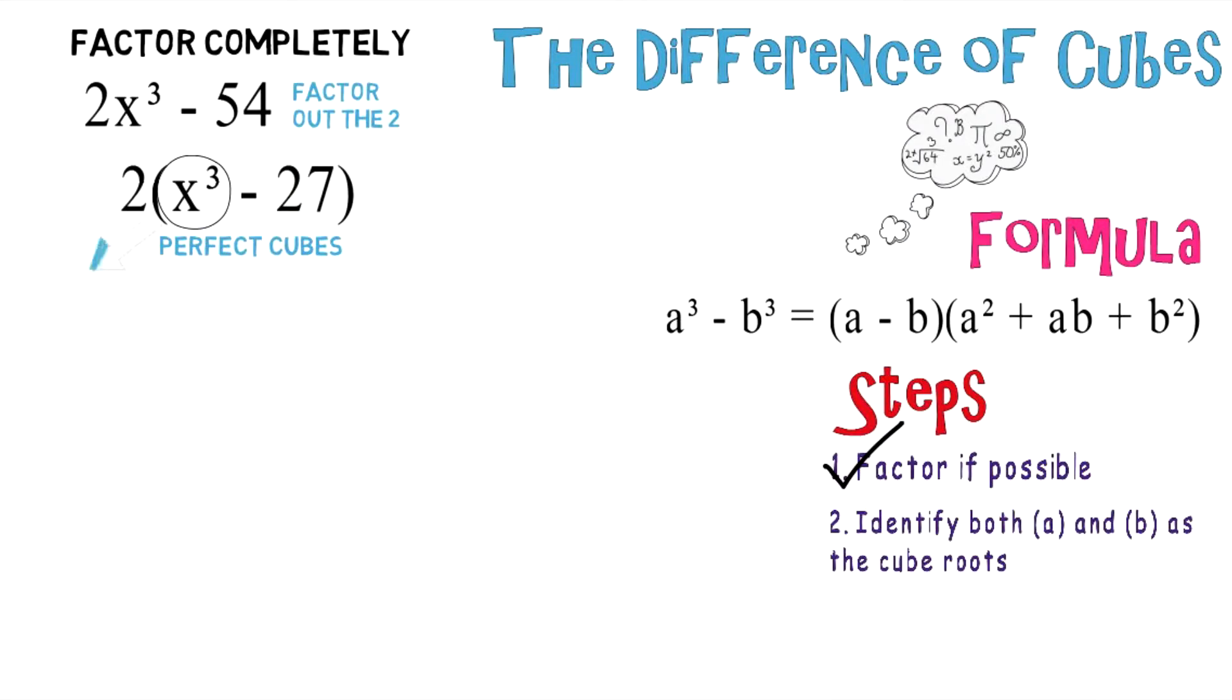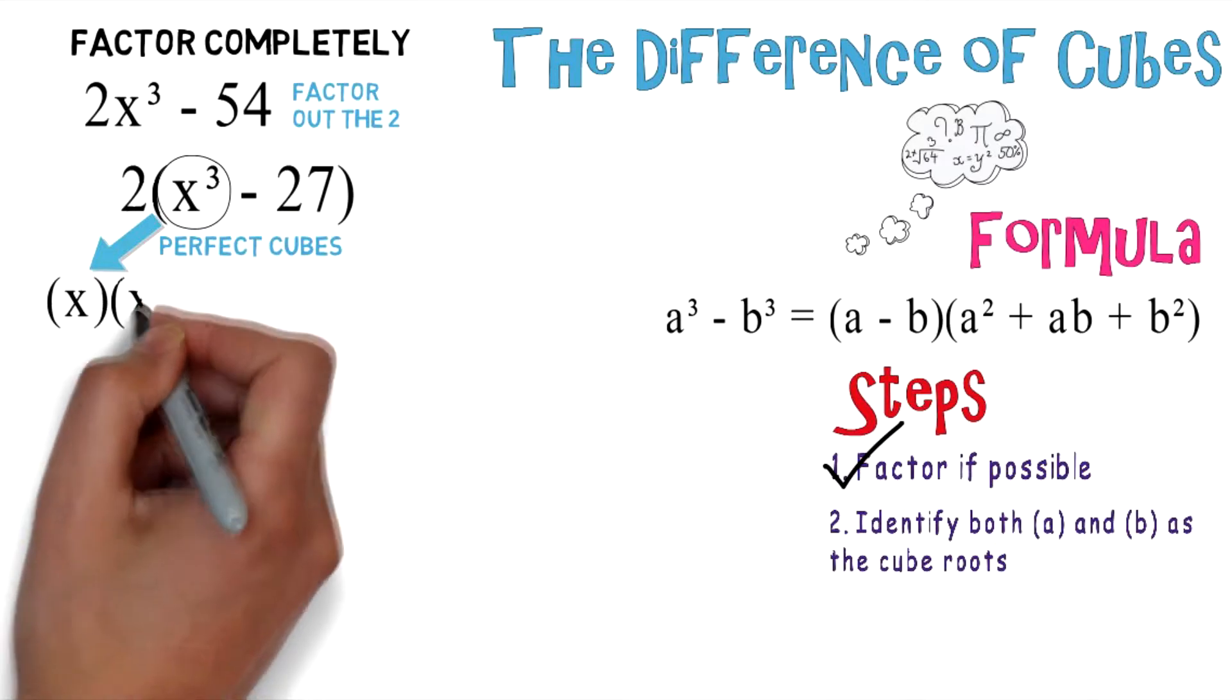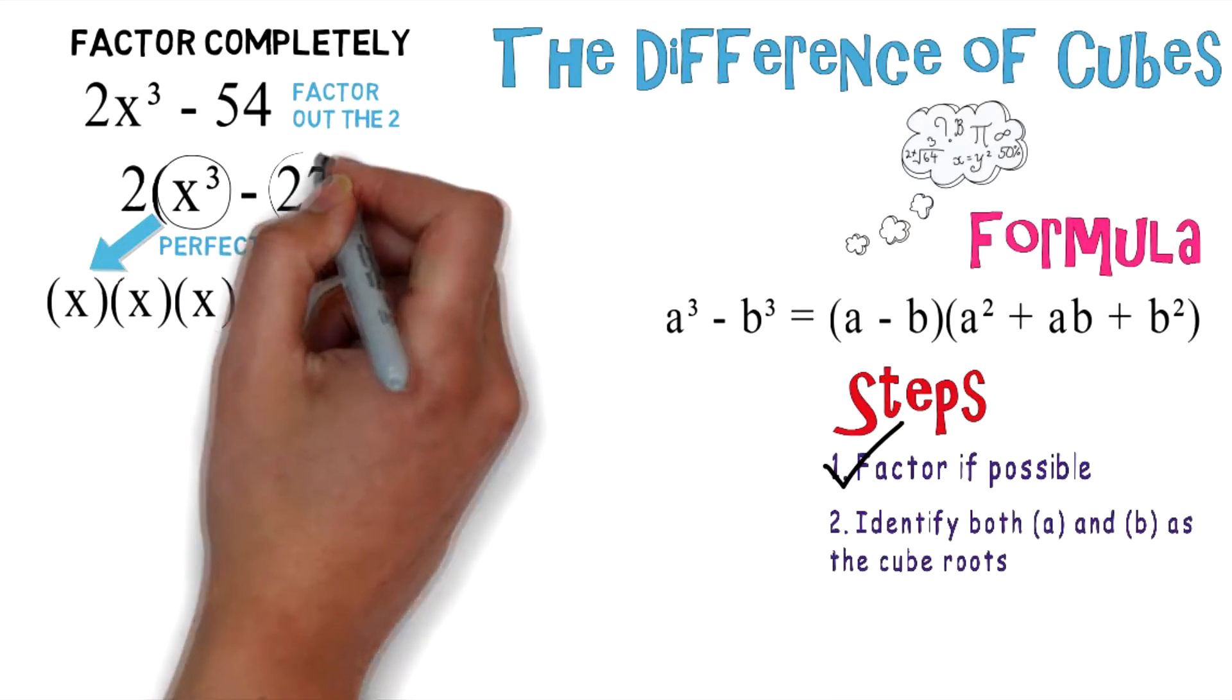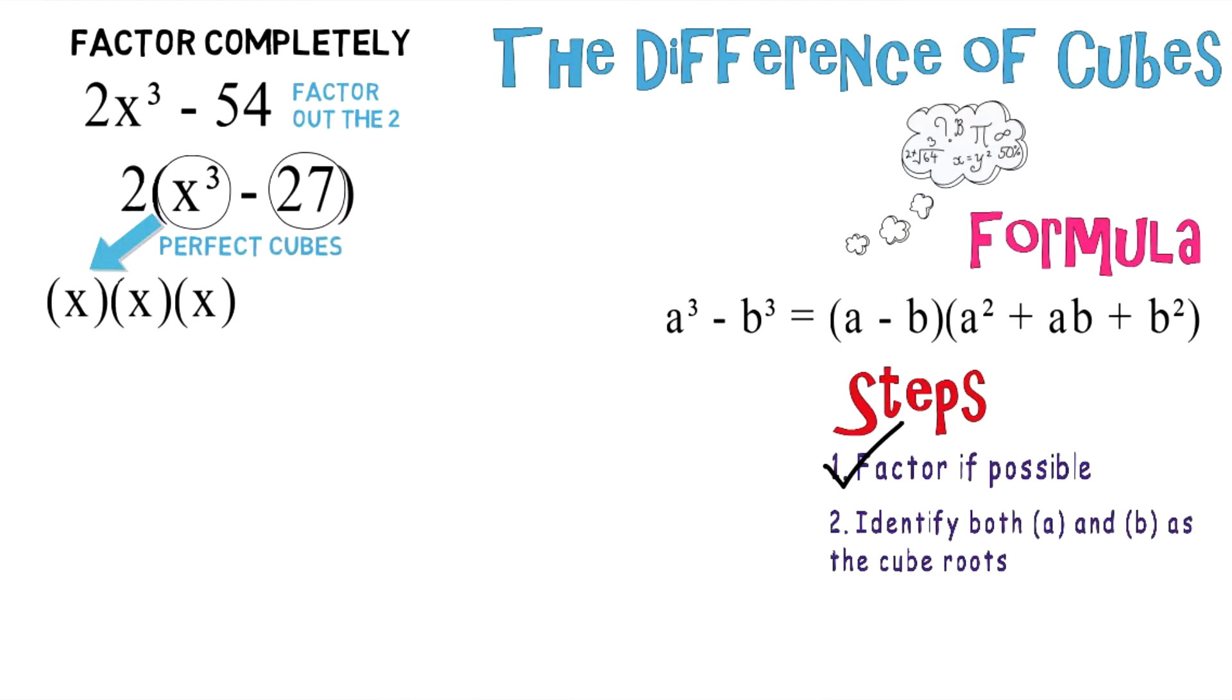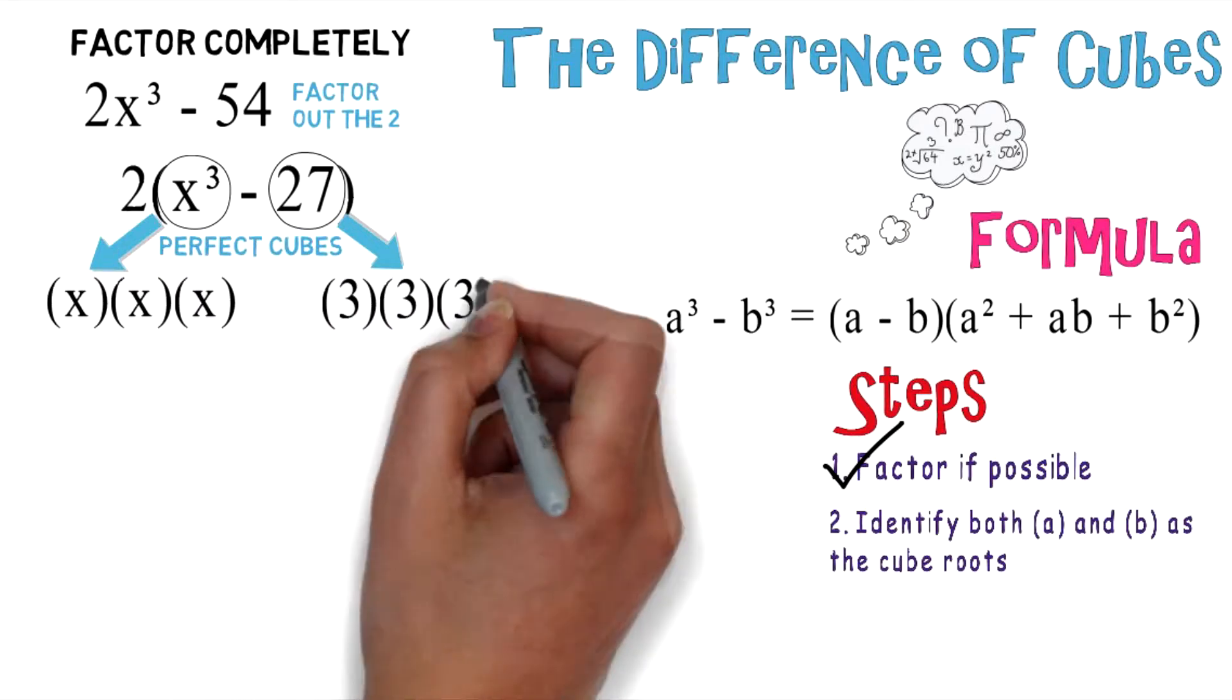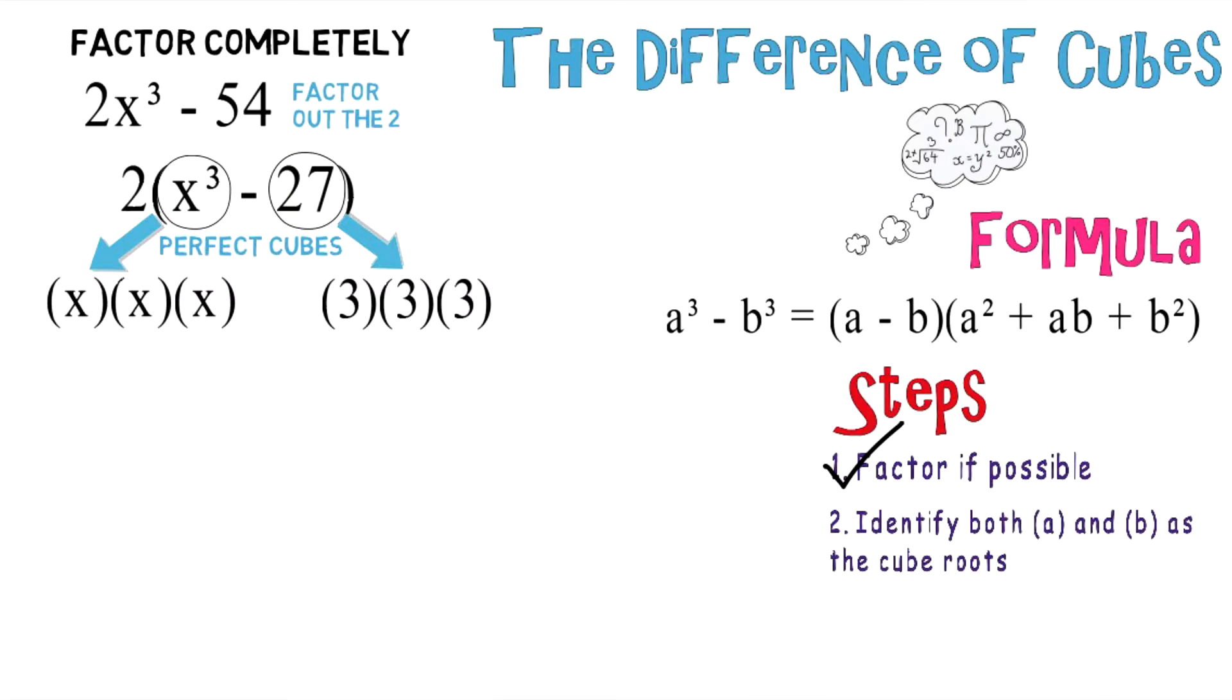Here you have x to the third power, and the cube root is going to be x because it's the same thing as x times x times x gives you x to the third power. Over here you have 27, and if you notice, 3 times 3 times 3 will give you 27.